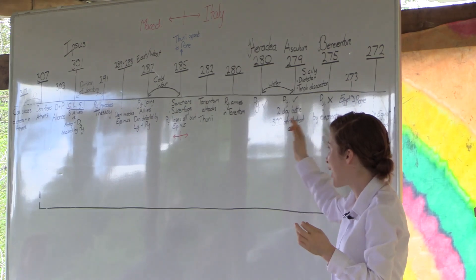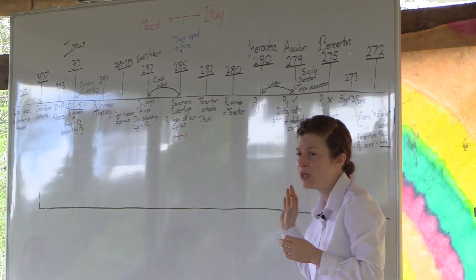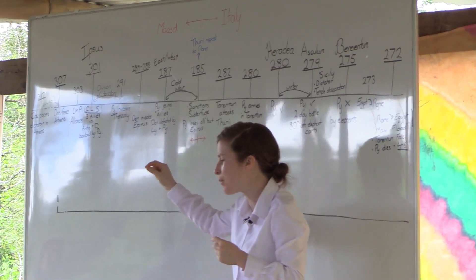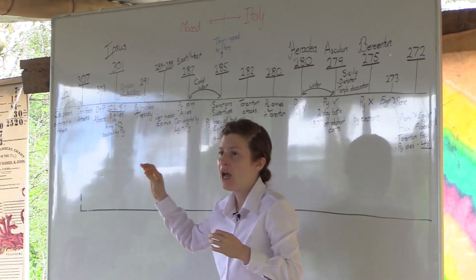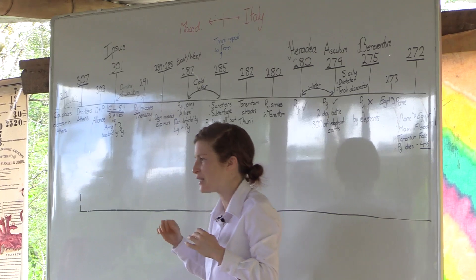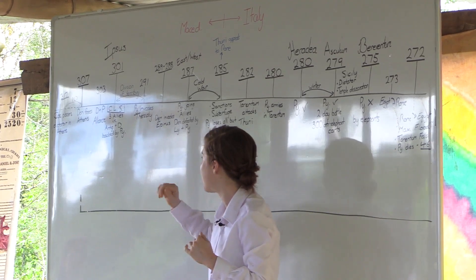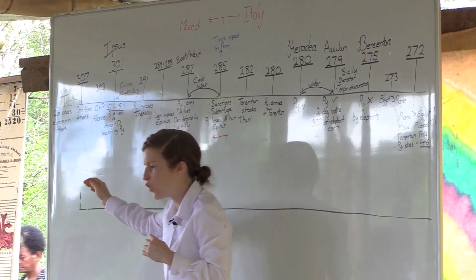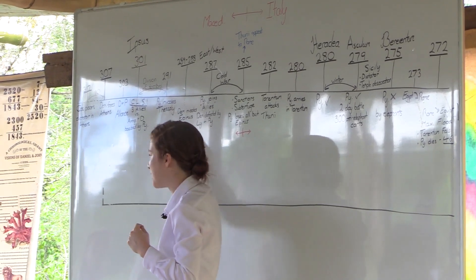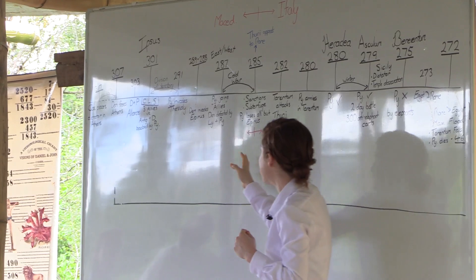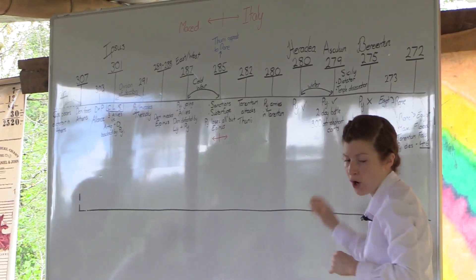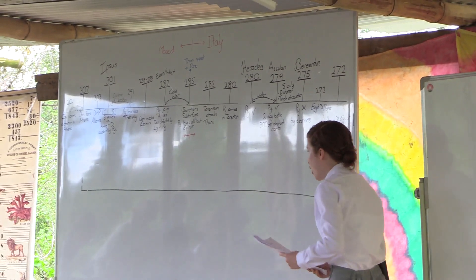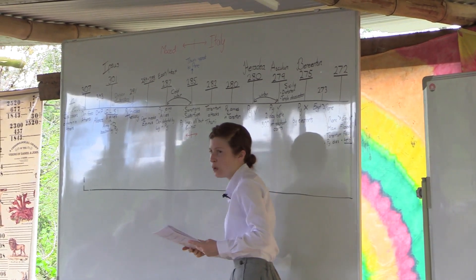But when we go farther back, if we go back to the very beginning of Pyrrhus, of the King of the South, we find that there is this first alpha history. That first of all, he has his campaigns in Macedonia that take place before the Pyrrhus War with Rome. So we went back to the beginning of Pyrrhus' involvement in world affairs.